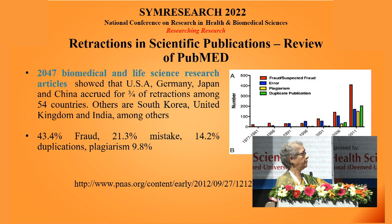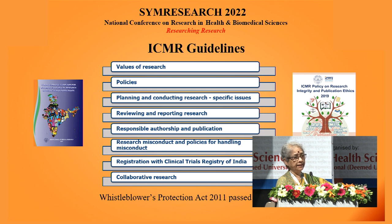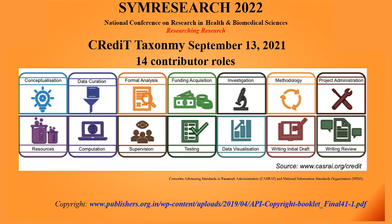When it comes to scientific publications, you can see from the graph that a lot of papers have been retracted when reported or when somebody finds it out — 43.4 percent fraud has been reported. I wanted to mention that the ICMR guidelines in the 2017 version brought out a separate section on responsible conduct of research, giving all these points. Besides that, there is the ICMR policy on research integrity and publication ethics. You also know about the Whistleblowers Protection Act. There is also a new concept with 14 contributors under CRediT: conceptualization, data curation, formal analysis, funding acquisition, investigation, methodology, and so on — every person involved has a defined role.